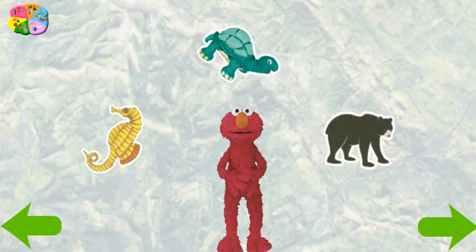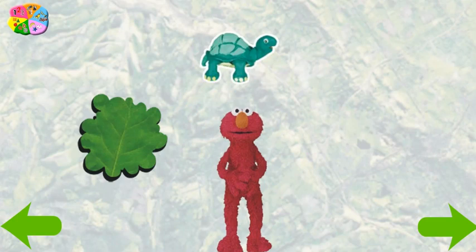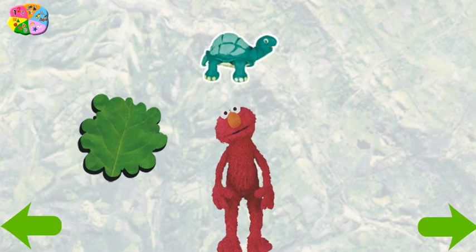Wow. These things look like fun. Let's play a game with them. Find a thing that is the color green. Turtle. Green. Very good. That's green, alright. Elmo found a terrific color finder. You.